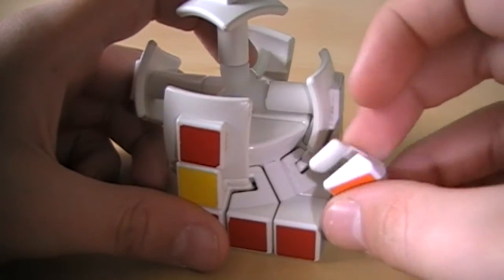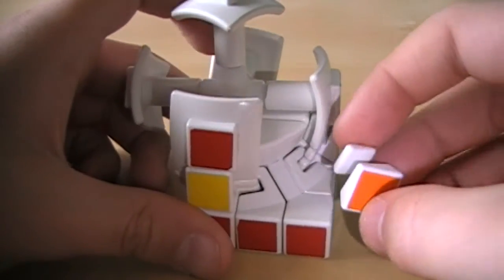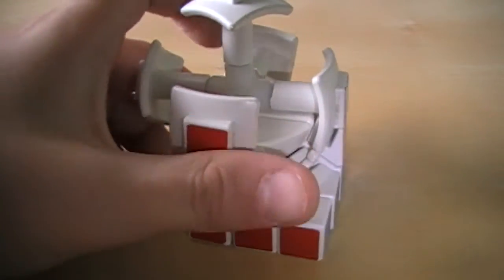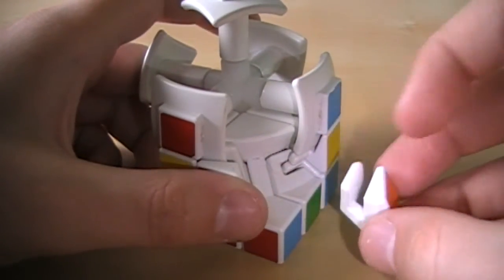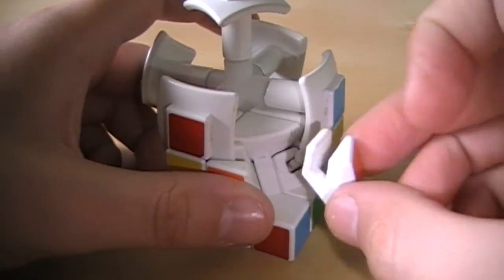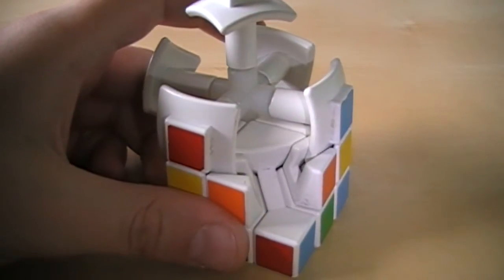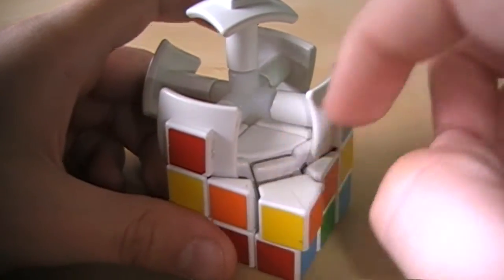And then get one of these pieces oriented like this and put it on there. And then do the same thing when we have it oriented like this, put it right there. Then grab a smaller edge piece and just put it on there.